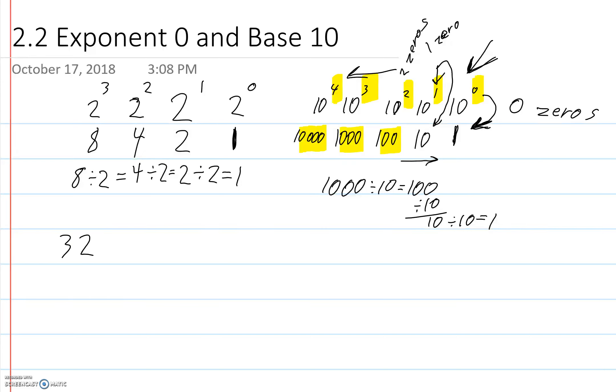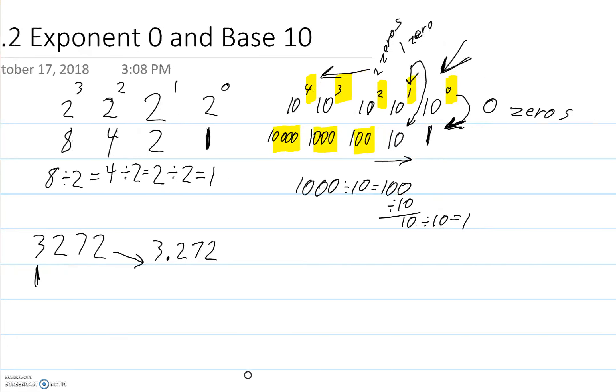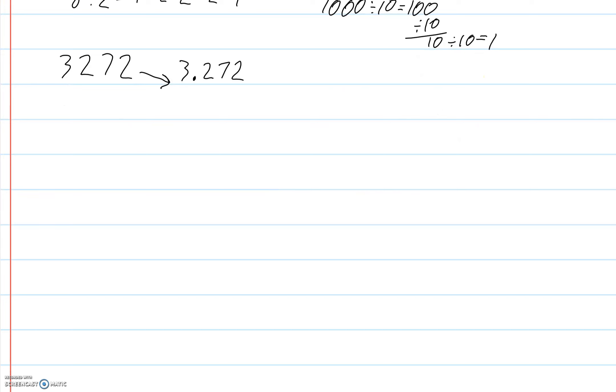If we have the number 3,272, what we do to change this into power form or my word for it is scientific notation, which is how most people eventually call it. The textbook doesn't call it that, but eventually it will get called that. You take the number and you write down the first digit, the 3. Then you put a decimal. Then you write down the rest of the numbers. Now, to get the decimal there, how did we have to move it? The decimal was right there, so we have to move it 1, 2, 3 spots. So we write times 10 to the 3.